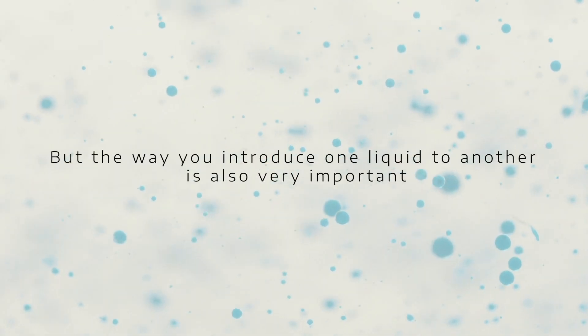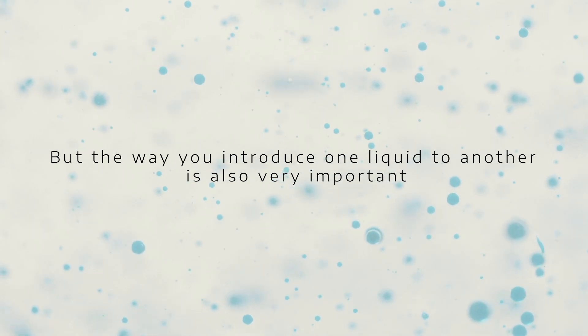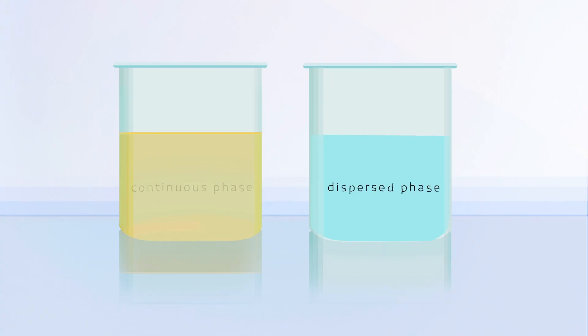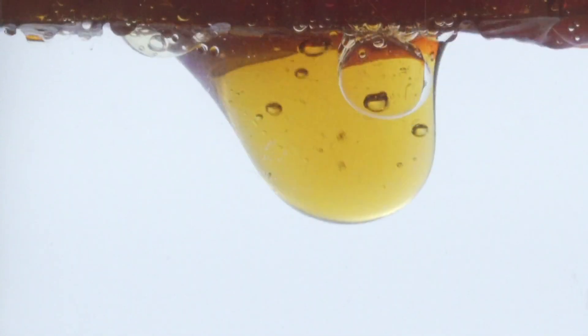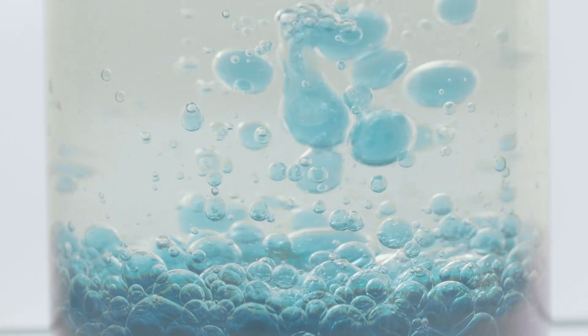But the way you introduce one liquid to another is also very important. You need to add the dispersed phase to the continuous phase at a controlled rate. And of course, if you're making an oil in water emulsion, you need to add the oil into the water. And the reverse for water in oil.